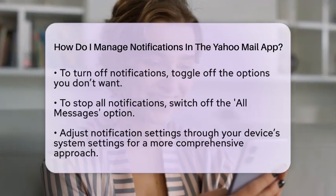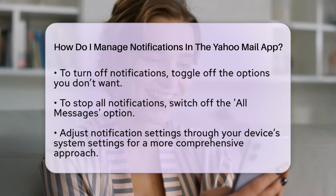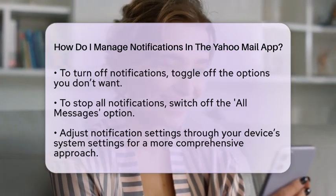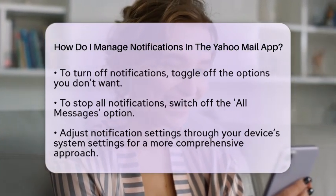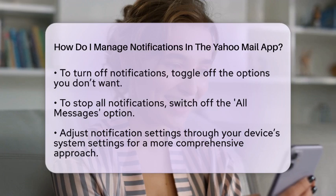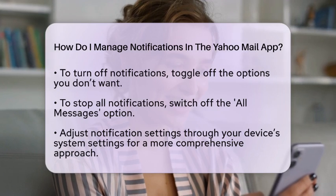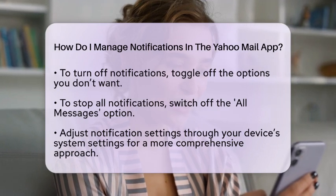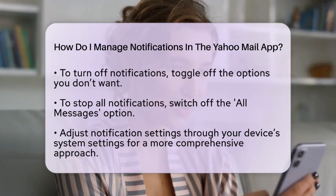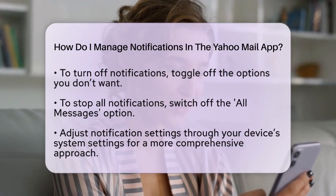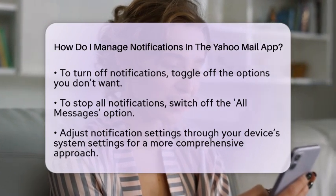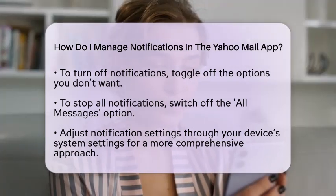For a more comprehensive approach, you can also adjust notification settings through your device's system settings. If you have an Android device, go to Settings, then Apps and Notifications, and find Yahoo Mail. Make sure notifications are enabled there.